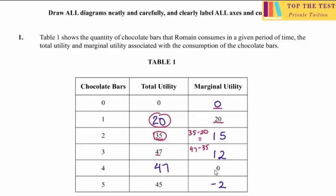For the 4th unit, the MU is 0. The difference in TU gives 0, so the only values that work are 47 and 47, since 47 minus 47 equals 0. For the 5th unit, the MU is negative 2 — the TU is 45, and 45 minus 47 gives us negative 2.